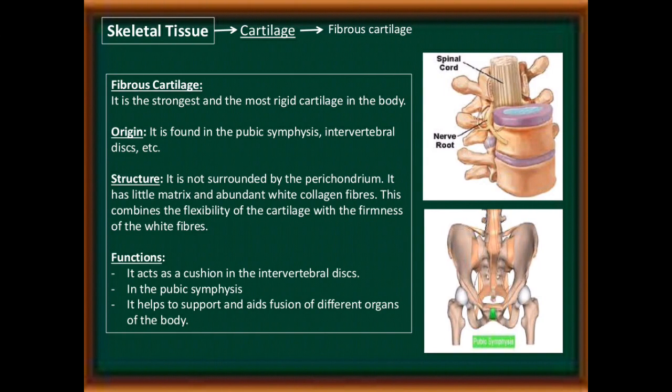Second: fibrous cartilage. It is the strongest and most rigid cartilage in the body. It is found in the pubic symphysis, intervertebral discs, etc. It is not surrounded by perichondrium. It has little matrix and abundant white collagen fibers, which combines the flexibility of cartilage with the firmness of white fibers. It acts as a cushion in the intervertebral discs, and in the pubic symphysis it helps support and aids fusion of different organs of the body.